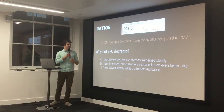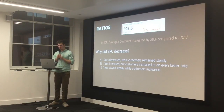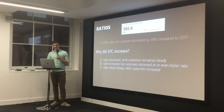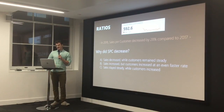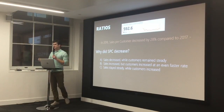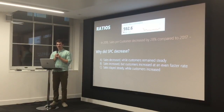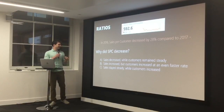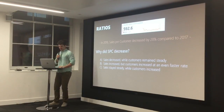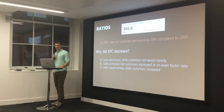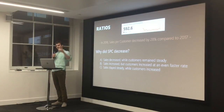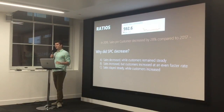A lot of metrics we use on dashboards are ratios. On this dashboard, I've made up a company that cares about sales per customer. In 2018, sales per customer declined 28% from 2017. The question is why: did sales decrease while customers stayed steady? Did sales increase but customers increased faster? Or did sales stay steady while customers grew? The point is we need more context — we don't really know what happened.